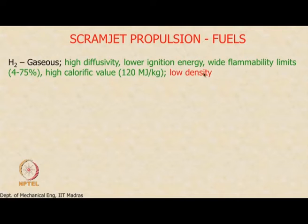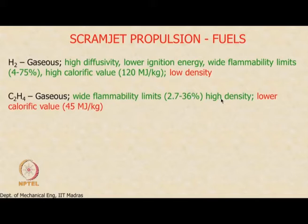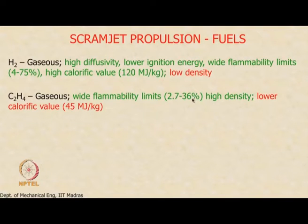Hydrogen has many desirable properties, but density is a major disadvantage, which has led researchers to try fuels like ethylene. Ethylene is widely used — it is a gaseous fuel with higher molecular weight, which means it has higher density. It has reasonably good flammability limits of about 2.7 to 36% by volume in air, which is actually quite good.